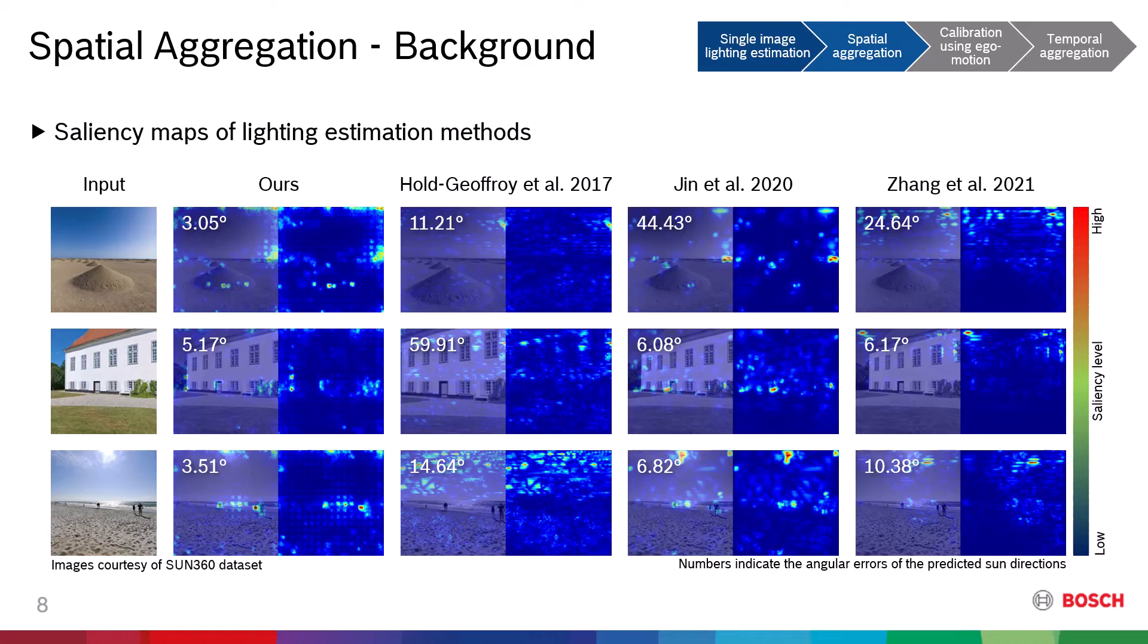In our experiment, we also observed that when letting the networks estimate the lighting on many small parts of the image, we achieve better performance on average when compared to training on the full-sized image.